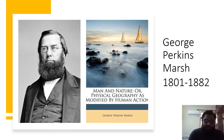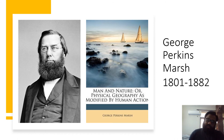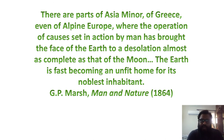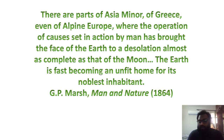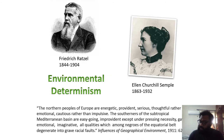George Perkins Marsh, in his book 'Man and Nature, or Physical Geography as Modified by Human Action,' highlighted the connection between geography and current life. He mentioned: 'There are parts of Asia Minor, of Greece, even of Alpine Europe, where the operation of causes set in action by man has brought the face of the earth to a desolation almost as complete as that of the moon. The earth is becoming an unfit home for its noblest inhabitant.' When we talk of climate change today, this statement made in 1864 means a great deal.